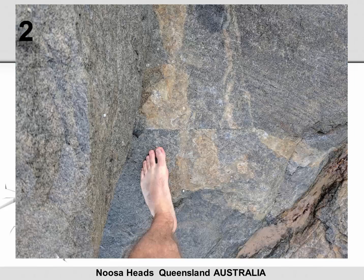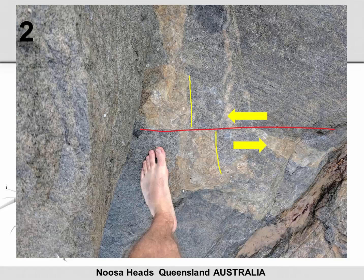Number two: Noosa Heads in Australia. Again, the first thing to do is identify the fault plane, located here. Then the layers as they used to match up, here and here. Because of the lateral offset, we understand this must have been a transform or strike-slip fault.